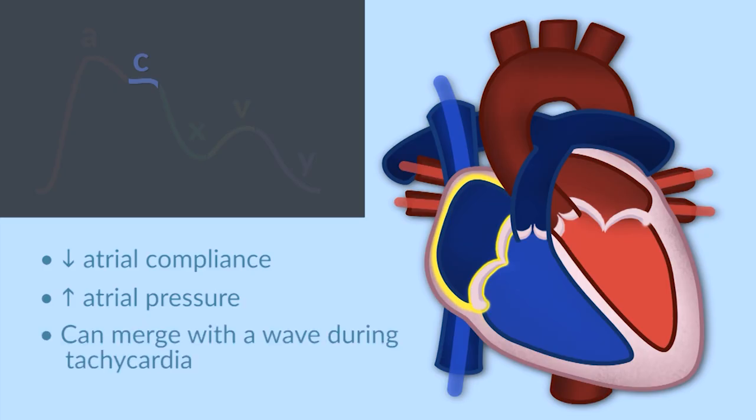What the C wave represents is bowing of the tricuspid valve back into the right atrium during systole, such that there is a transient decrease in atrial compliance and an increase in atrial pressure. During tachycardia, the C wave commonly becomes merged with the A wave, and under those circumstances, it's almost impossible to differentiate the A and the C waves.